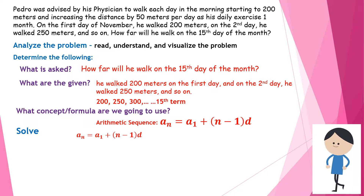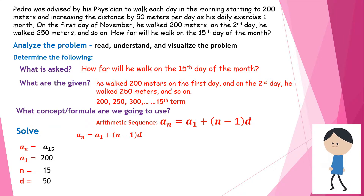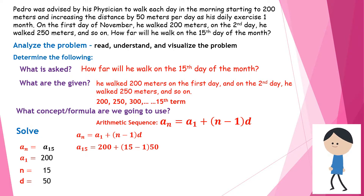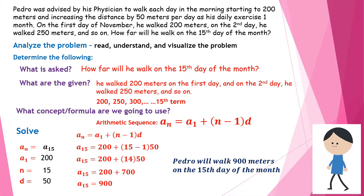Using the formula a sub n equals a sub 1 plus n minus 1 times d, we identify: a sub 15 is unknown, a sub 1 is 200, n is 15, and d is 50. Substituting, we get a sub 15 equals 200 plus 15 minus 1 times 50, which gives 200 plus 14 times 50, equaling 200 plus 700, so a sub 15 equals 900. Therefore, Pedro will walk 900 meters on the 15th day of the month.